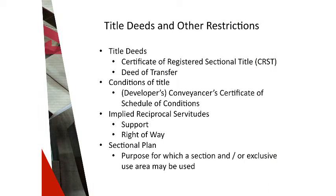When a sectional title register is opened, a certificate of registered sectional title is issued to the developer for each unit in the scheme. When the developer or any subsequent owner transfers a unit, a deed of transfer is issued to the new owner. Registered exclusive use rights are held under notarial deeds. There are no title deeds for exclusive use rights created in terms of either the scheme's management or conduct rules. Conditions of title are restrictions on an owner's right to deal freely with their property. On the opening of the sectional title register, the developer's conveyancer lodges a certificate setting out the title deed conditions in detail, available in the register at the deeds office.